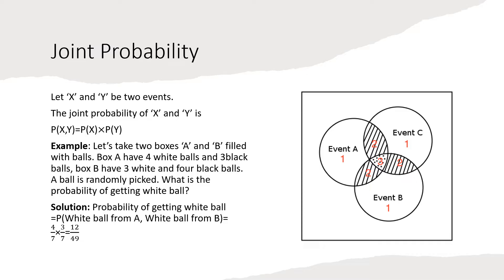To give some more explanation: if we have a set of events A, B, and C, in joint probability it is the overlapping area of the sets where the probability of the outcome we are looking for comes from. So wherever you see the overlap in the Venn diagram, that is the point where you get the probability of both events occurring together.